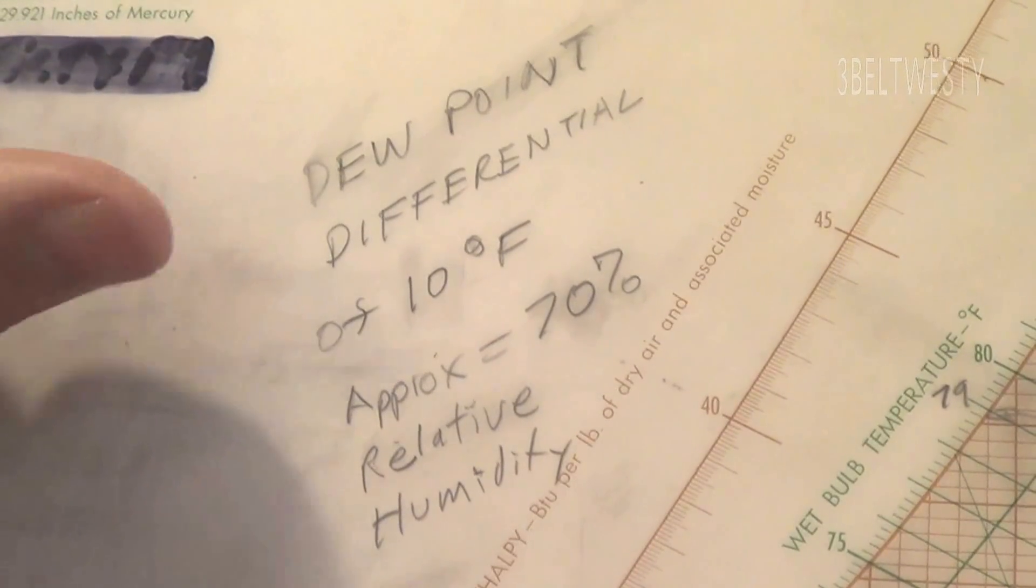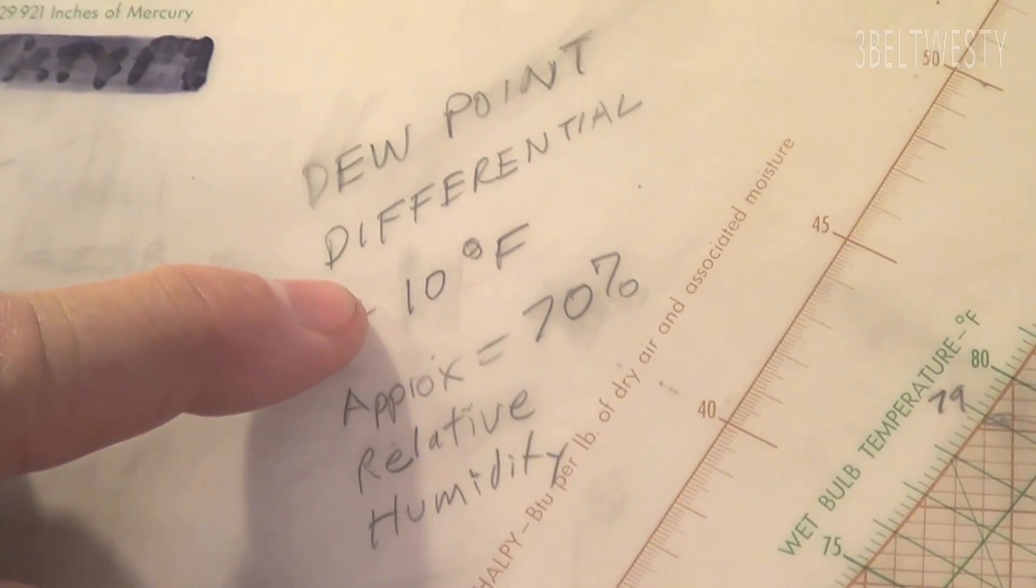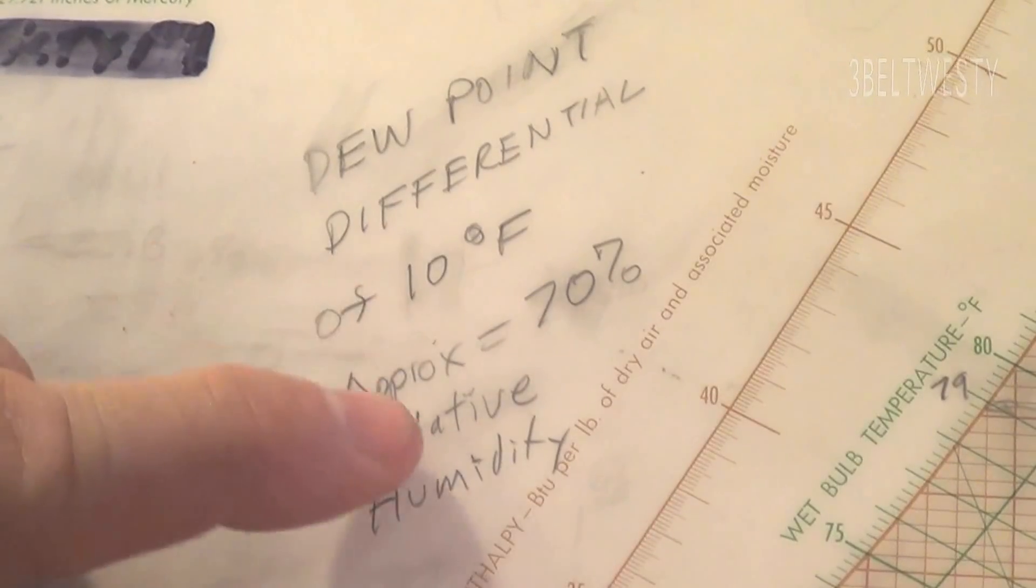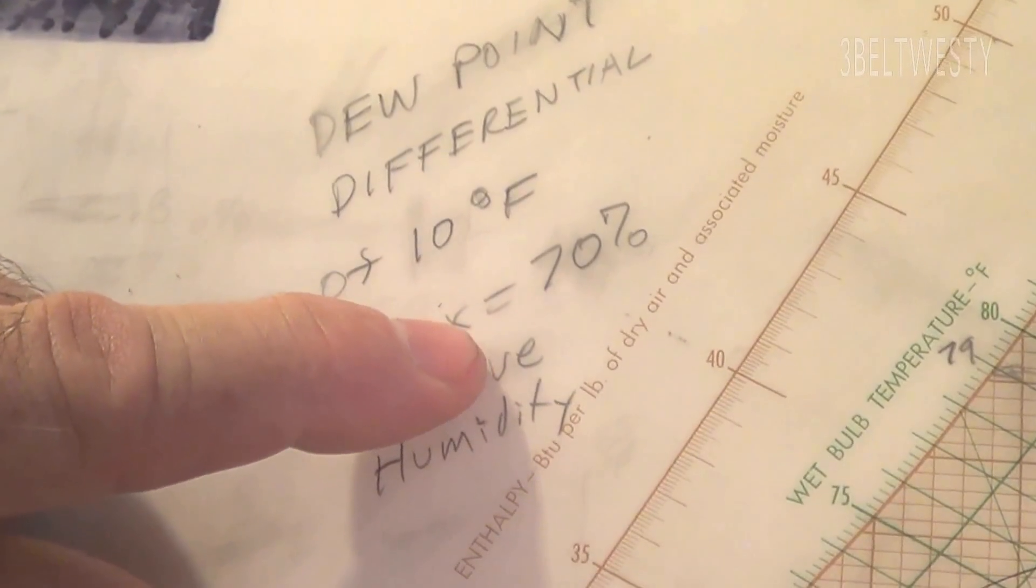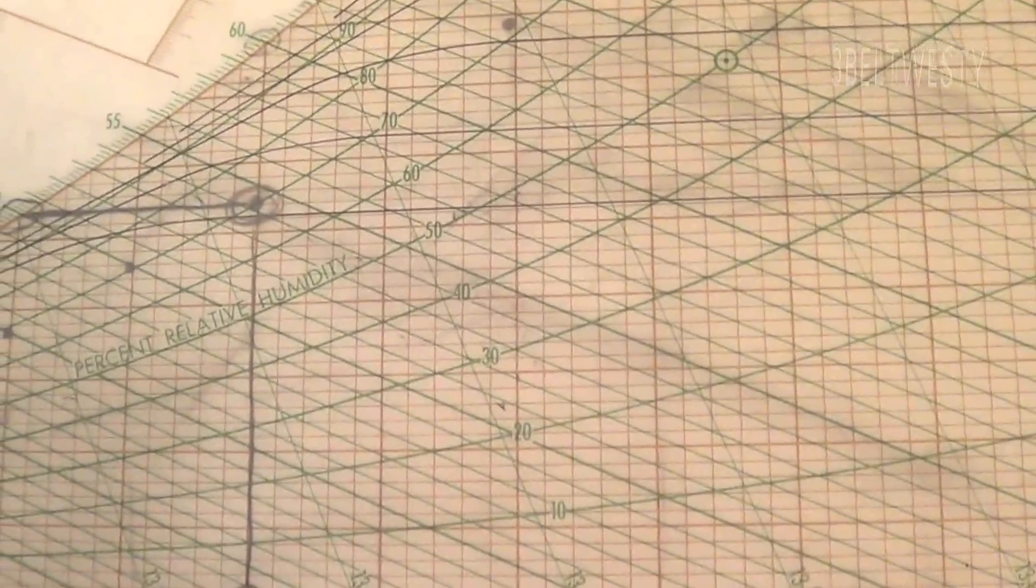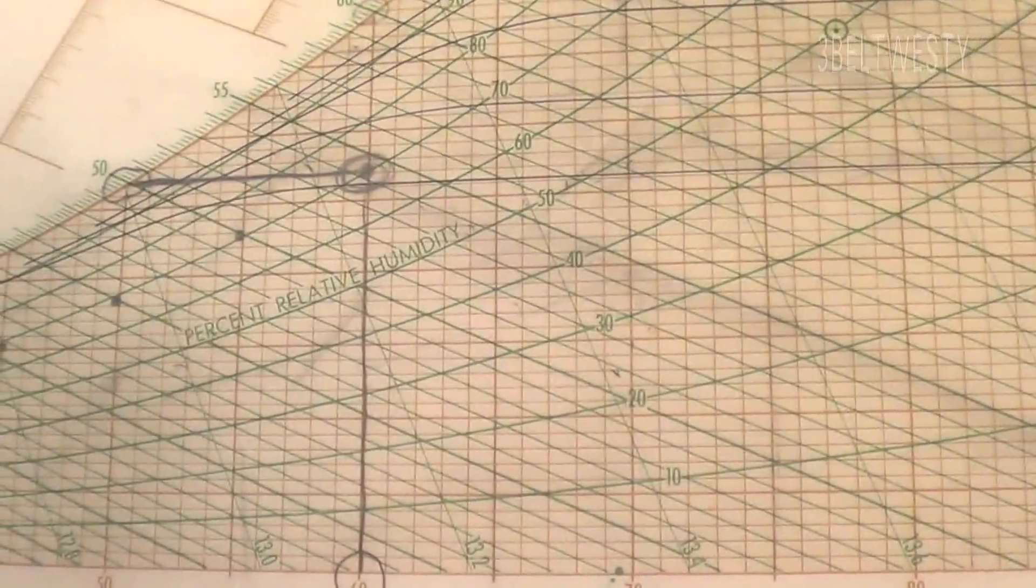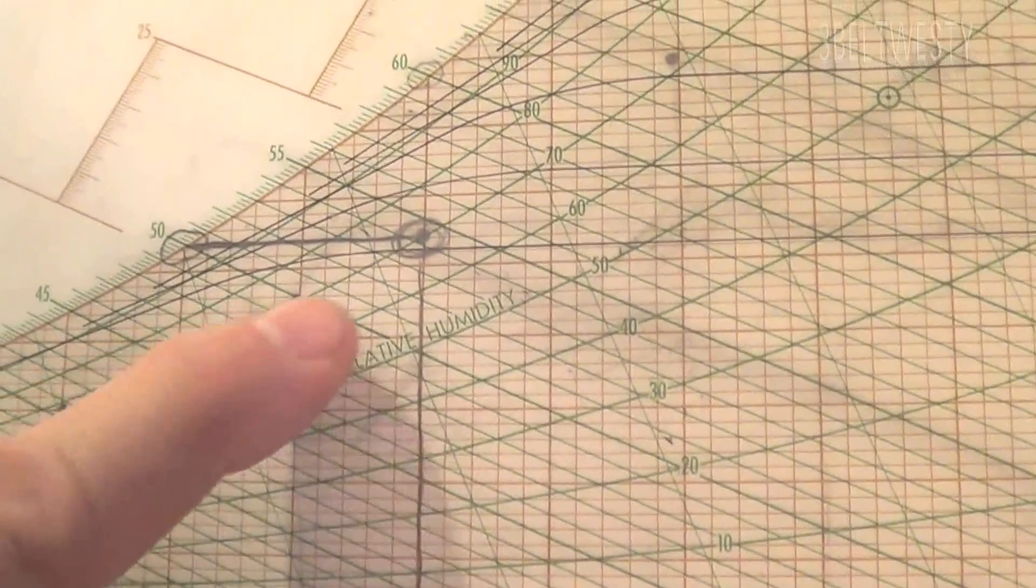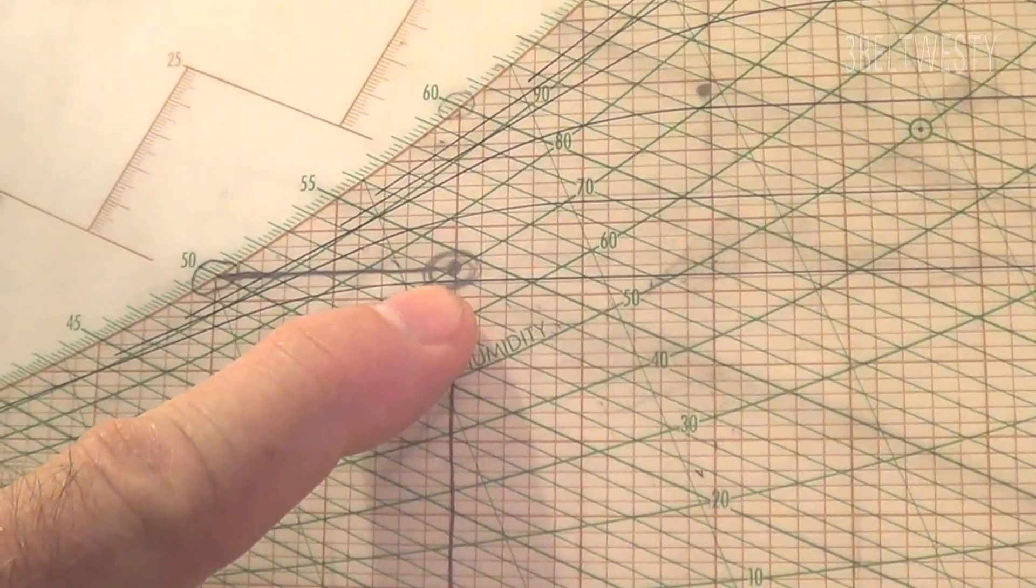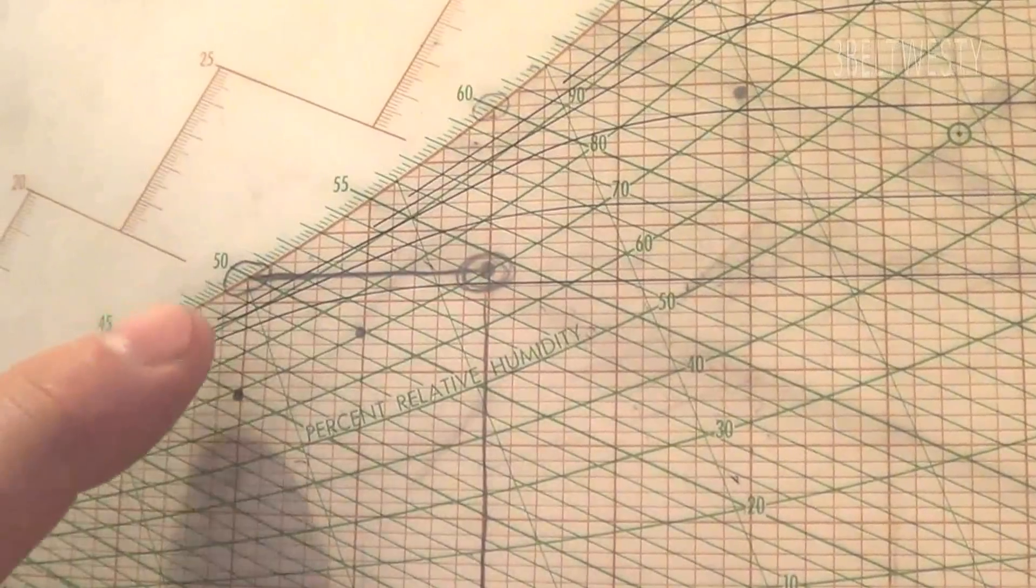Here's another rule of thumb: a dew point differential of 10 degrees Fahrenheit is approximately 70% relative humidity. So if you take 60°F dry bulb and it's 70% relative humidity...